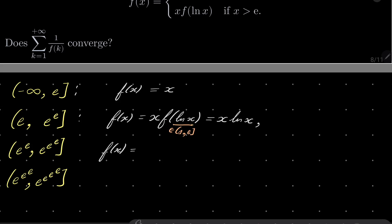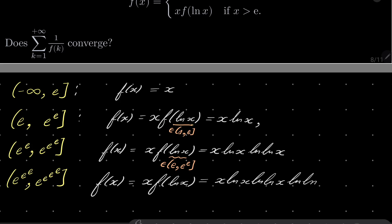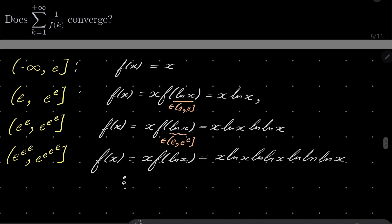Next, on the interval from e^e to e^(e^e), we have f of x equals x times f of natural log of x. But this time natural log of x is from e to e^e, and we know from the previous part that on that interval the function equals its argument times the natural log of its argument. So with natural log of x as the argument, we get x times natural log of x times natural log of natural log of x. And so on — you can probably see the pattern. If you wish to be rigorous, prove it by induction.